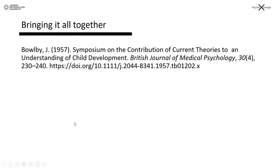So if we brought that all together, it should look like this — with the commas and full stops, the year in brackets, the full stop, the title of the journal article, and you can see it's not in italics. Then the title of the journal it belongs to in italics, volume number in italics, issue number in brackets, comma, page number, full stop, and finally the actual DOI or URL number which you can retrieve the article from, which makes life a bit easier.